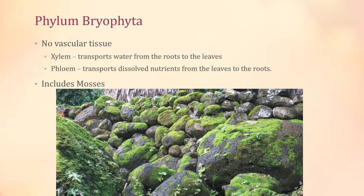Because this group lacks vascular tissue, they can't move water or food around in their body very well, so they have to stay really small — they rely on diffusion. We do get mosses here in Texas, but I took this picture in Hawaii. All the stuff on the surface of that rock is moss growing there; all that green stuff is moss — that would be phylum Bryophyta.